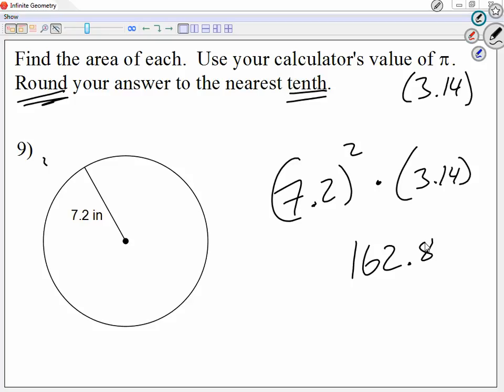So remember, we go radius squared times a decimal for pi. So once again, we're using a decimal for pi because it says round your answer to such and such thing. Okay. So any questions on the front? No?